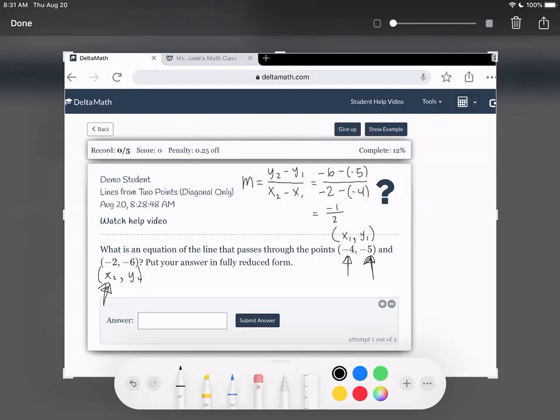So our slope is negative 1 half. I'll just put a box around it for now, so it stands out a little bit, because we're not done yet. We need to find an equation, not just the slope. Any questions on the slope so far?